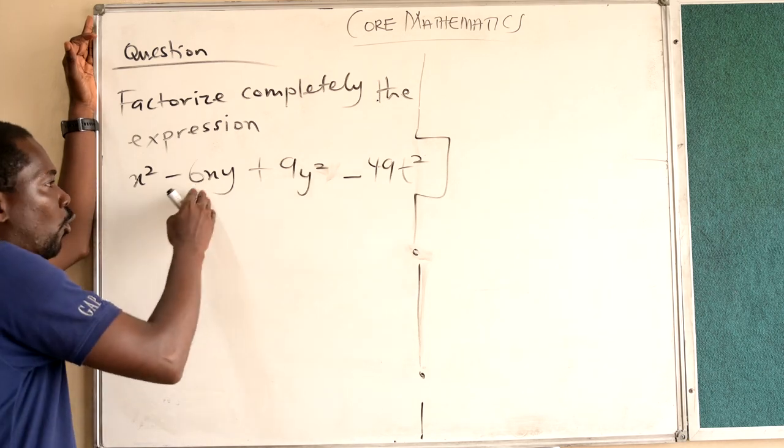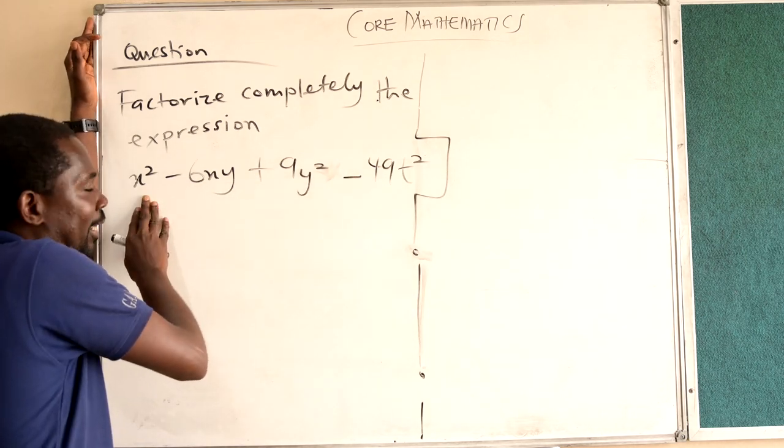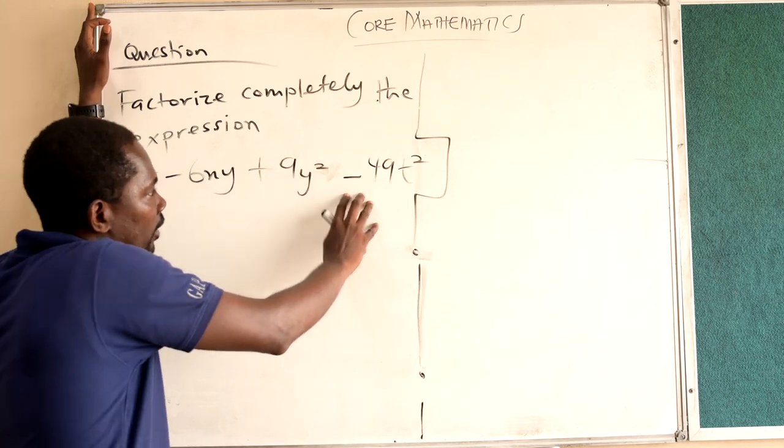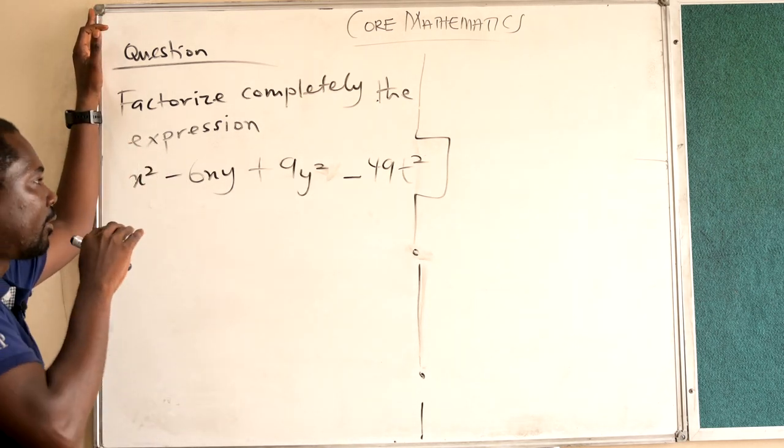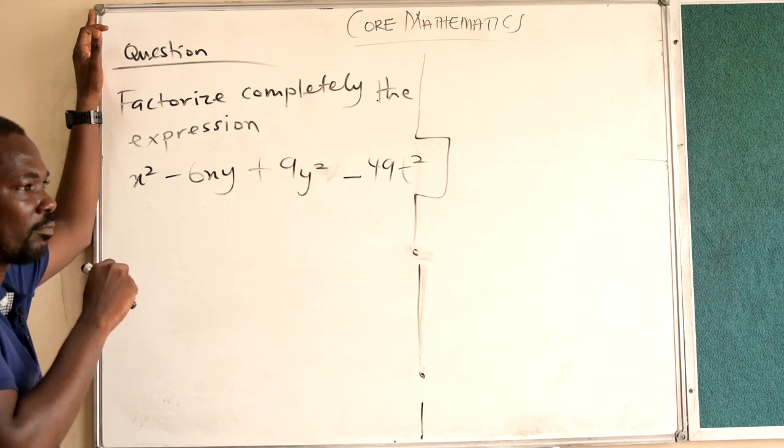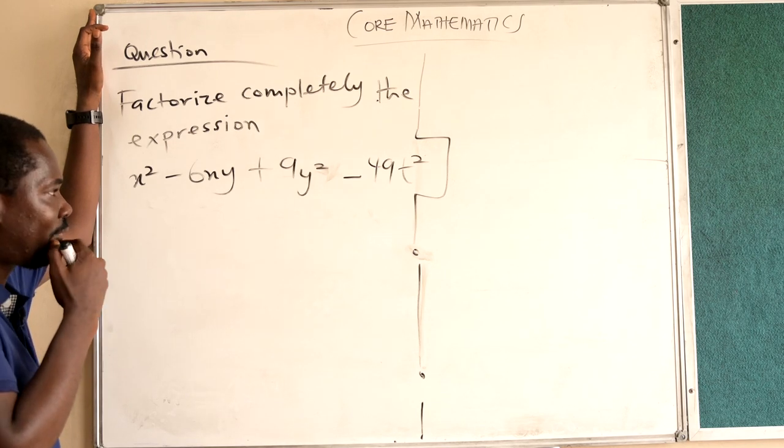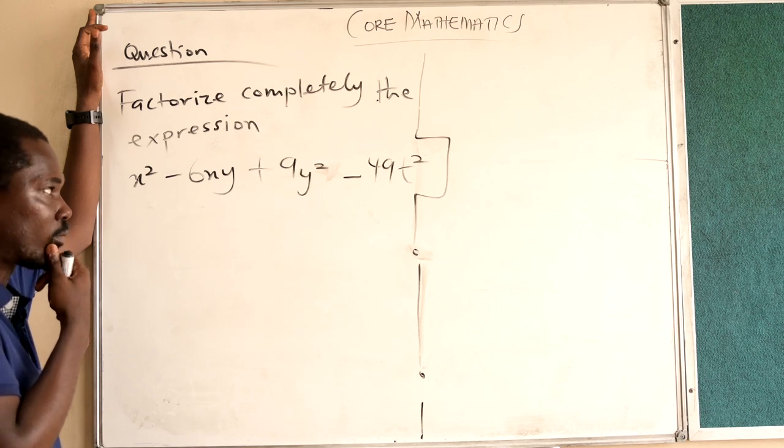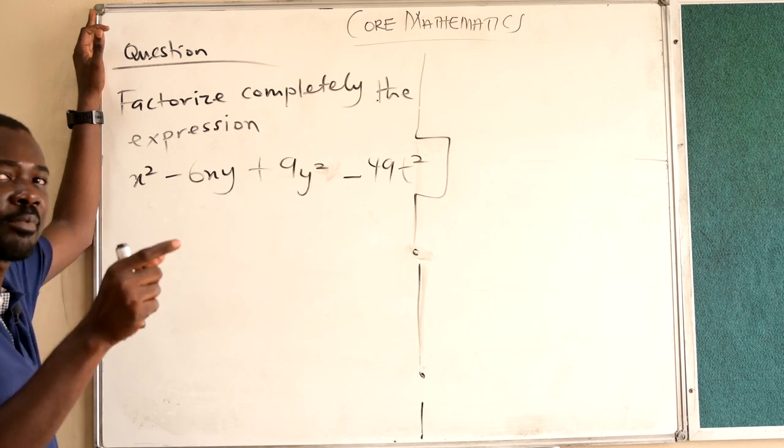Even though we have four terms here: x squared, negative 6xy, plus 9y squared, negative 49t squared, we don't have clear common factors we could use. And there is something we can do.